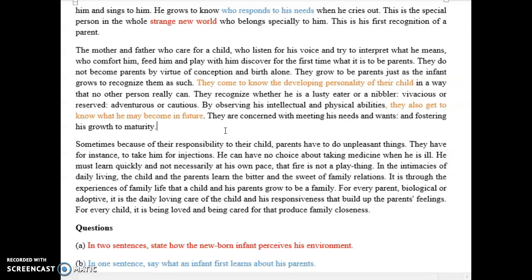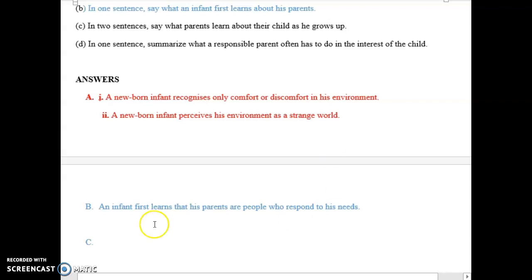They recognize whether it is a quiet or active child, diversions of the child, adventures or cautious. By observing his intellectual and physical abilities, they also get to know what he will become in the future. So we have our two answers here. We must not leave them at ease mindlessly. We have to write them out. Your sentences must be grammatically correct, they must be acceptable and you must be elegant.